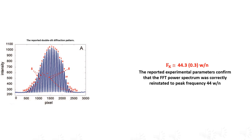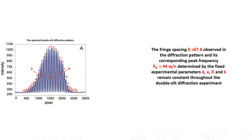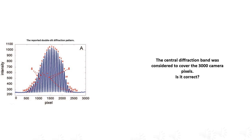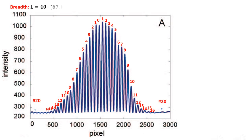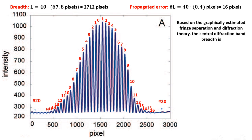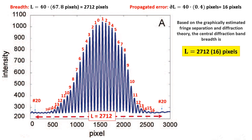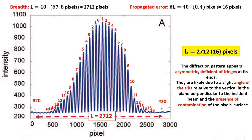The fringe spacing delta observed in the diffraction pattern and its corresponding peak frequency fk, determined by the fixed experimental parameters small d, a, capital D, and lambda, remain constant throughout the double-slit diffraction experiment. The central diffraction band was considered to cover the 3,000 camera pixels — but based on the graphically estimated fringe separation and diffraction theory, the central diffraction band breadth is 2,712 pixels with 16 pixels propagated error. The diffraction pattern appears asymmetric, deficient of fringes at its ends, likely due to a slight angle of the slits relative to the vertical plane perpendicular to the incident beam, and the presence of contamination on the pixel's surface.